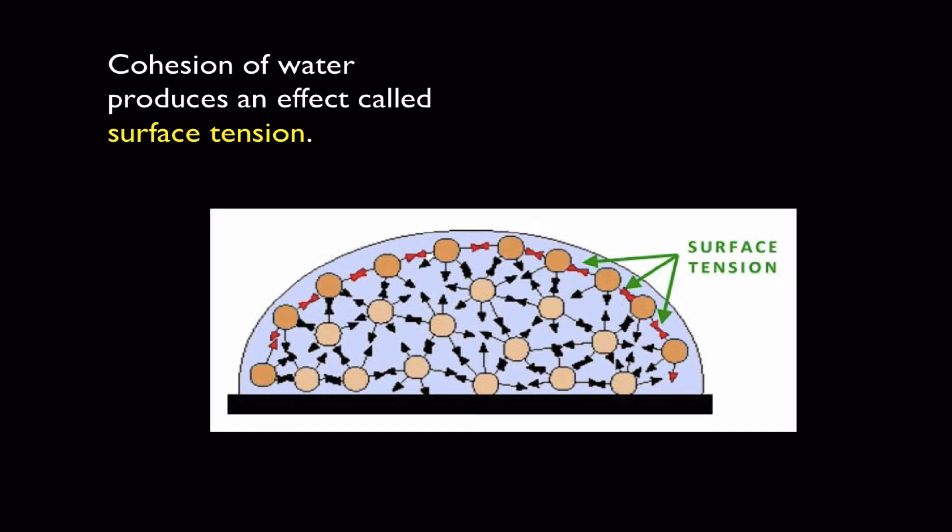We've already talked about how water is a very cohesive molecule, which means it sticks to other water molecules fairly tightly with all these little hydrogen bonds. If you imagine a dome-shaped pile of water like we see in this picture, you can see that each little water molecule is attracted to its neighbors, the ones near it.